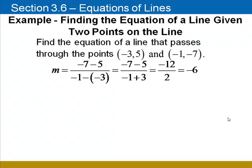We'll begin by finding the slope. y₂ minus y₁ is negative 7 minus 5. In the denominator, x₂ minus x₁ is negative 1 minus negative 3, which we can rewrite as negative 1 plus 3. Simplifying the numerator and denominator, the slope is negative 12 divided by 2, or negative 6.